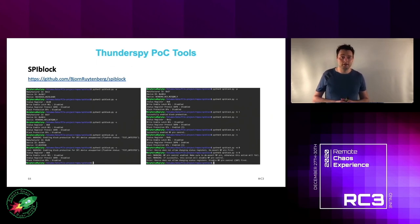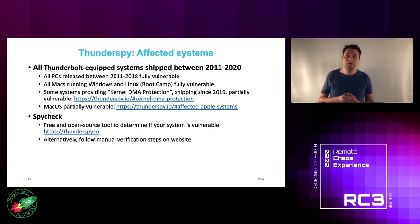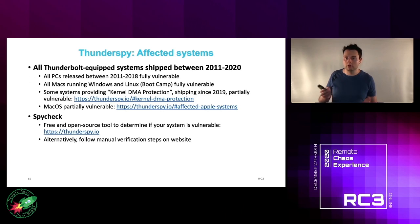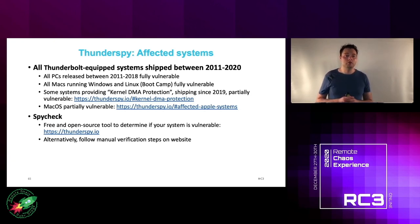Regarding affected systems: all Thunderbolt-equipped systems shipped between 2011 and today are vulnerable. This especially applies to all PCs released between 2011 and 2018, which are fully vulnerable. All Macs running Windows and Linux via Boot Camp are fully vulnerable as well. Some systems providing kernel DMA protection are partially vulnerable. Systems running macOS are also partially vulnerable. You can check whether your system is vulnerable using our tool SpyCheck or by following the manual ThunderSpy verification steps on our website.